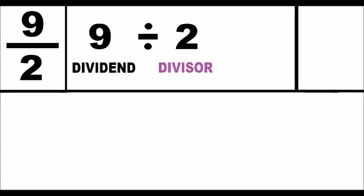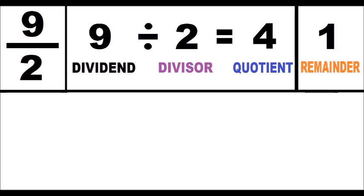Second step: the denominator 9 divided by the numerator 2. I get the quotient 4, and the remainder of the division is 1.